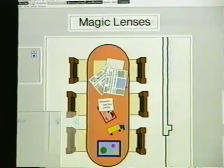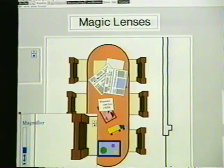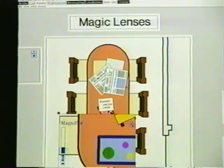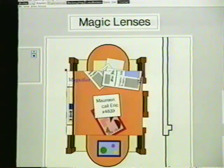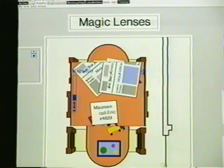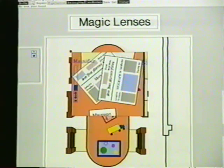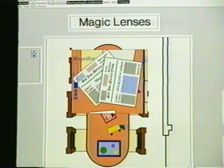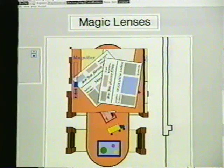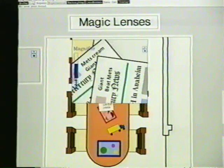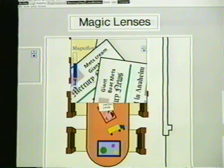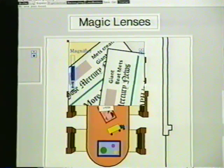Tool glass sheets can include magic lenses, visual filters that modify the appearance of the objects beneath them. For example, this lens magnifies the objects underneath. We control the magnification with this slider, increasing or decreasing.